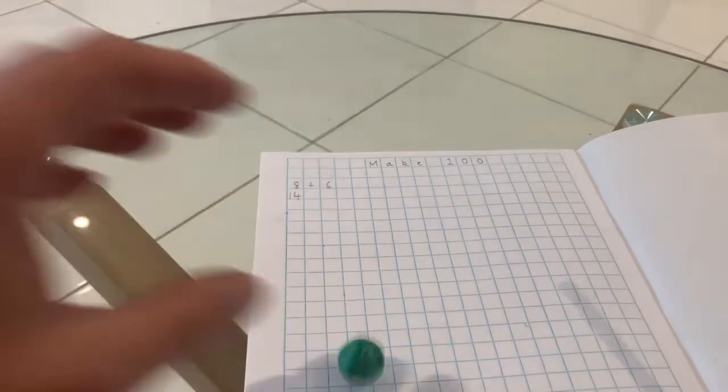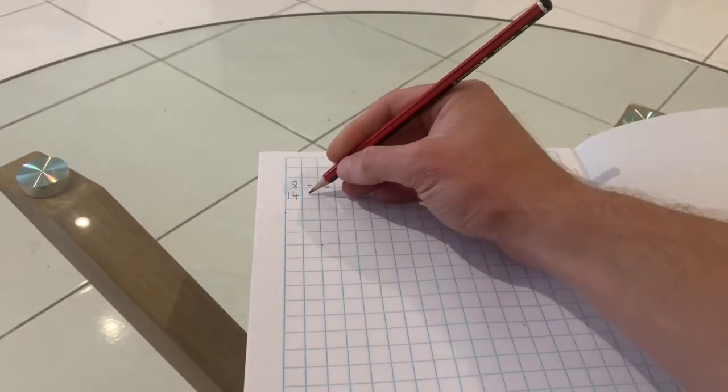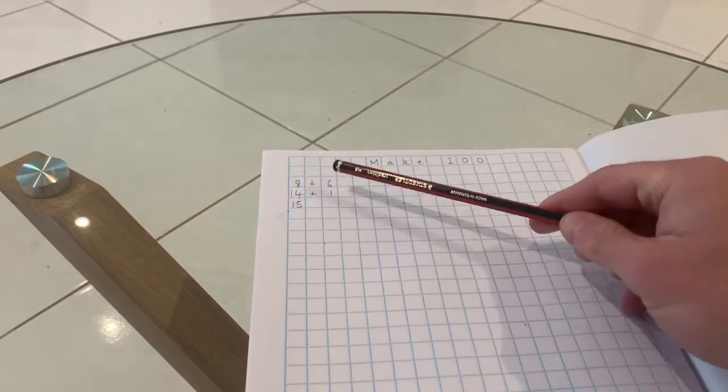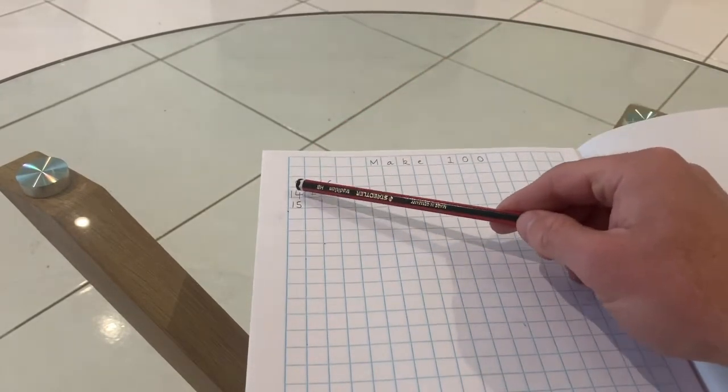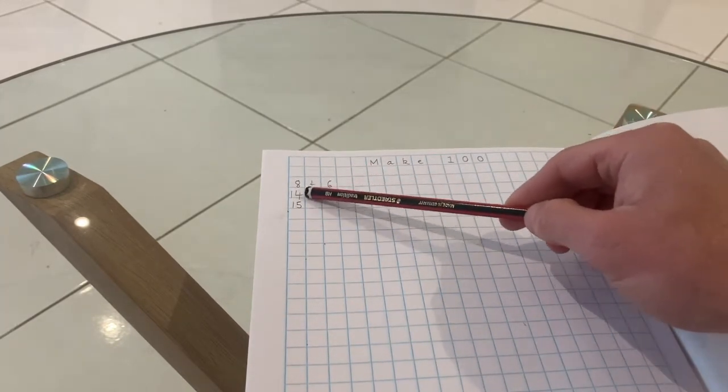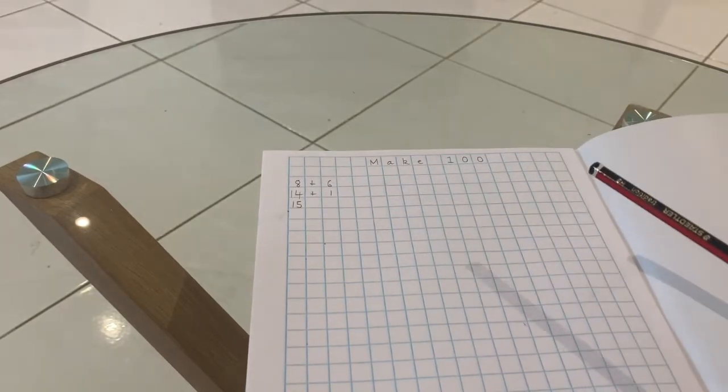I roll again and this time I got a 1. So plus 1 is 15. I'm always having the answer directly underneath and I make sure I write what I'm adding each time so that it can be checked at the end.